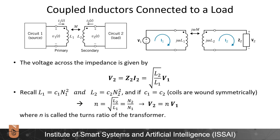The voltage across the impedance V2 equals Z2 times I2, which equals the square root of L2 over L1 times V1. Recalling that L1 equals C1·N1 squared and L2 equals C2·N2 squared, and if the coils are wound symmetrically so C1 equals C2, then we obtain the turns ratio n equals N2 over N1. In this special transformer case, V2 equals n times V1 — the ratio of coil windings directly scales the voltage.